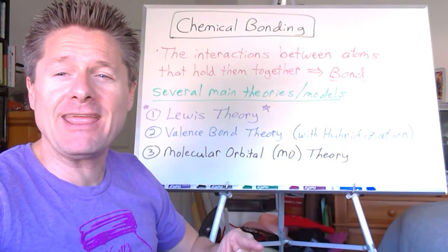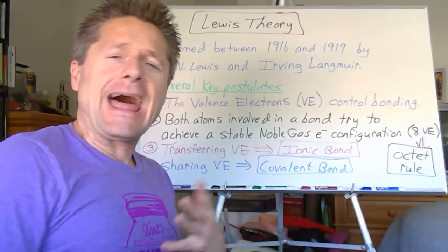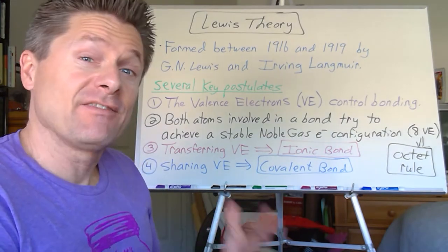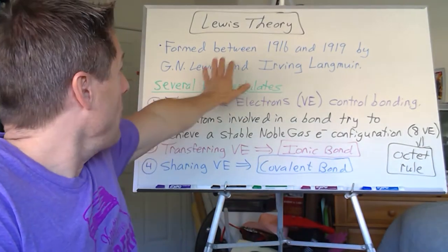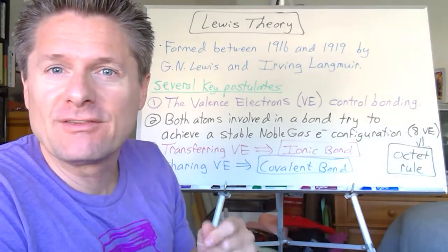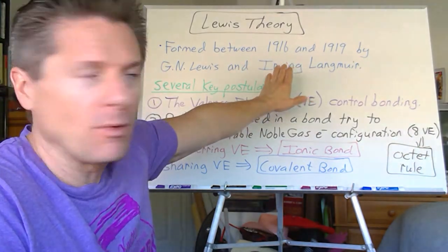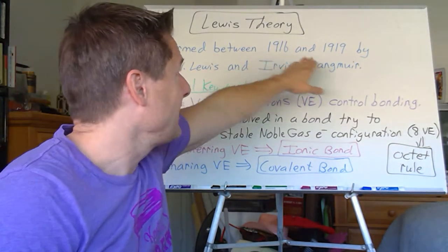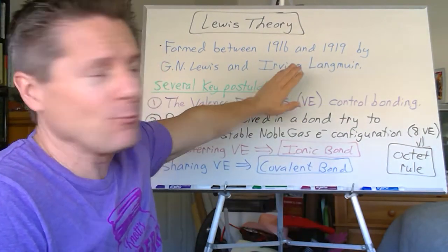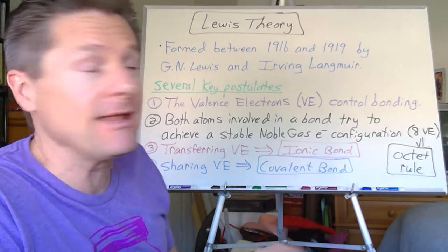Let's get going with Lewis theory. A lot of Lewis theory we've already sort of talked about — I think it's fairly intuitive. G.N. Lewis was working on it in the early 1900s, around 1916 to 1919, along with Irving Langmuir, but it's accredited mostly to G.N. Lewis. That's why it's called Lewis theory.